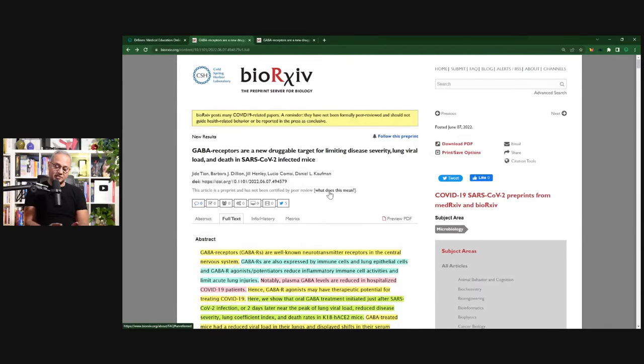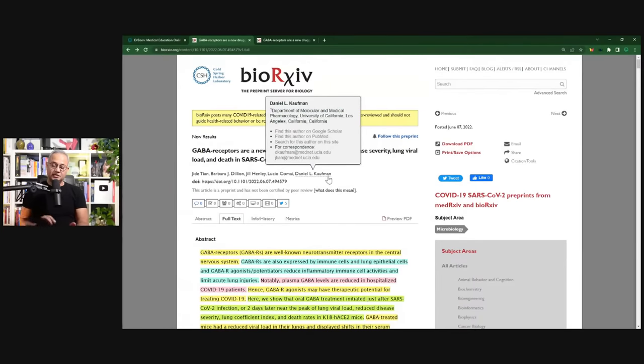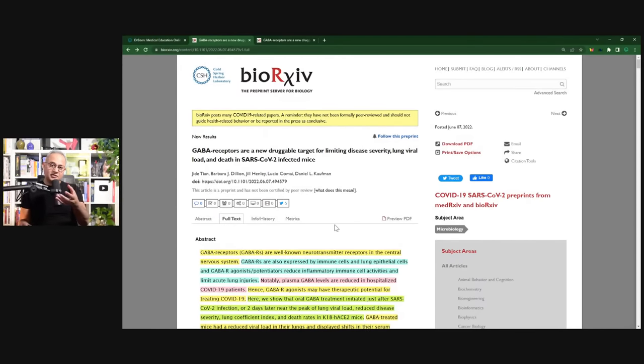Plus there can be clinical trials that can use GABA as well. GABA, as Dr. Professor Daniel Kaufman, who is one of the authors here, researchers here, he noted GABA is cheap or inexpensive, easily available worldwide, stable at room temperature, off the shelf in most, in many countries or over the counter in many countries. And as you would see here, very beneficial if provided, if administered early.